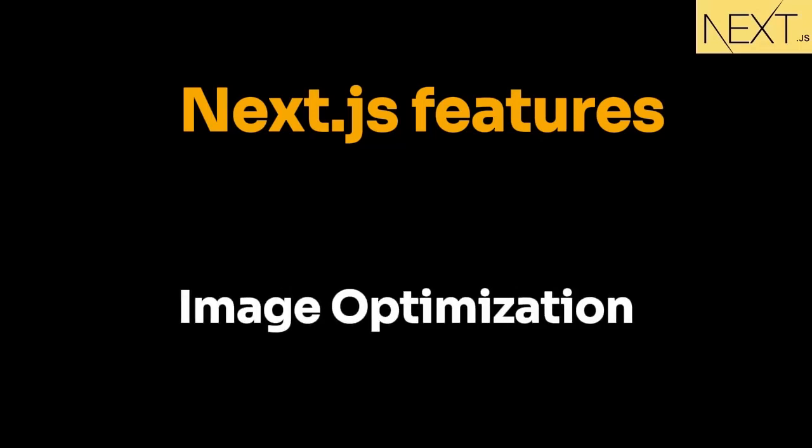The next feature is image optimization. Next.js automatically optimizes images that are part of the public folder. Other frameworks like Angular or React don't have this optimization feature, but Next.js takes care of optimizing all static content on its own as a built-in framework feature. Additionally, these images are automatically lazy loaded.